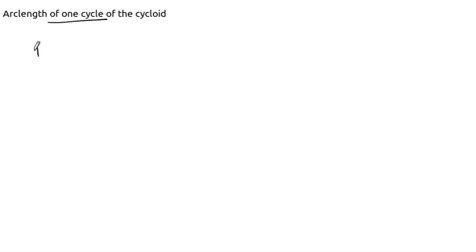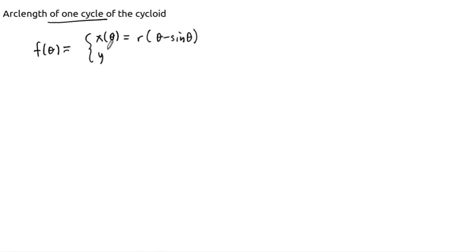In this one we want to try to determine the arc length of one cycle of a cycloid. The cycloid's parametric formula is given by: x of theta equals r times theta minus sine of theta, and y of theta equals r times one minus cosine of theta. One cycle of this cycloid, where theta goes from zero to two pi, corresponds to one complete rotation of the circle used to trace it out.